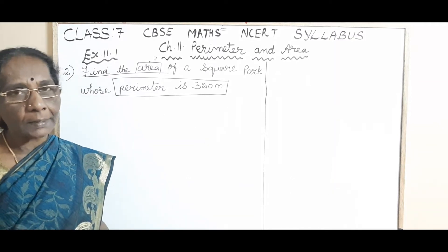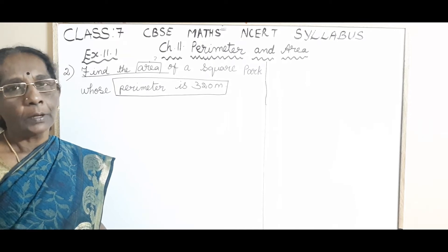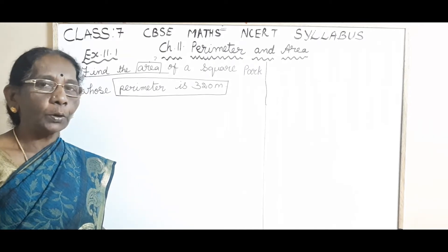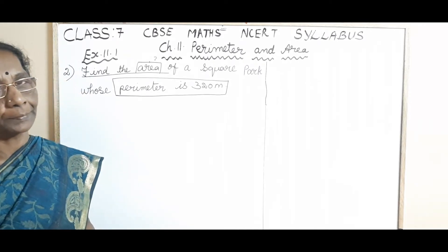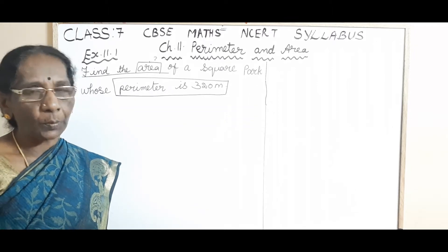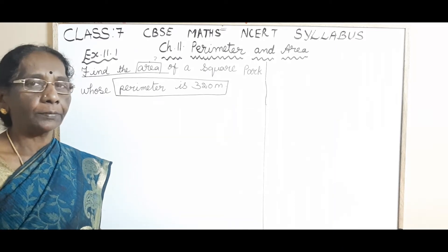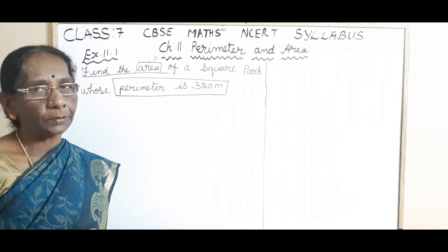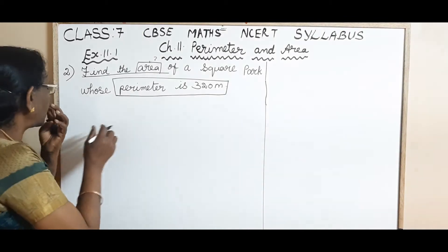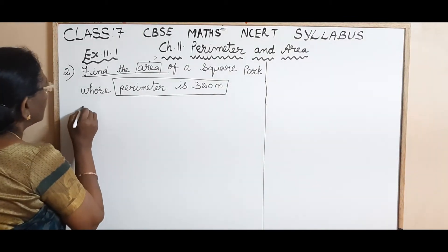Then, the second part of the question answer is, using that side, you have to find the area. So you should know the formula. So be thorough with the formula for finding the area of rectangle and square. Now, solution.